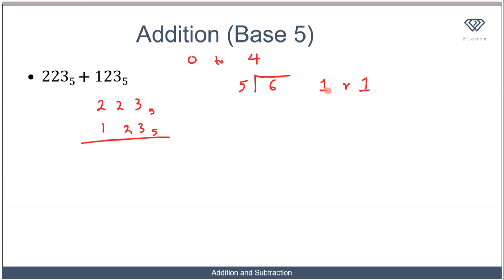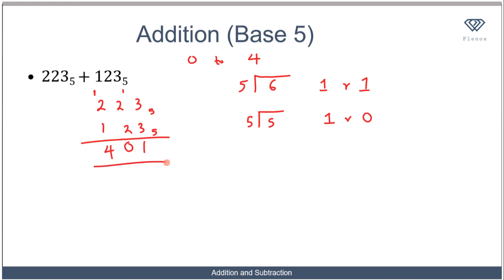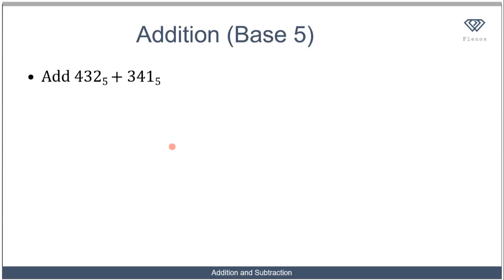Write the remainder 1 down and carry the 1 to the next place value. Then divide by the base: 5 divided by 5 is 1 remainder 0 — write 0, carry 1. Then 2 plus 1 plus 1 equals 4, which is not more than 4, so write it directly. Adding these two numbers in base five gives the result 401 in base five.